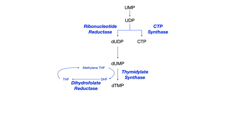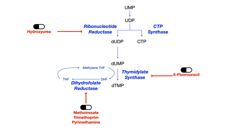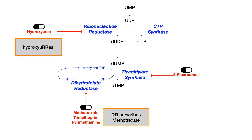Several drugs inhibit enzymes in the thymidylate synthase and THF-DHF cycle. Hydroxyurea inhibits ribonucleotide reductase. 5-fluorouracil inhibits thymidylate synthase. Methotrexate, trimethoprim, and pyrimethamine all inhibit dihydrofolate reductase. For mnemonics: hydroxyurea has two R's — RR for ribonucleotide reductase. For dihydrofolate reductase, DR stands for 'doctor,' and the doctor prescribes methotrexate, trimethoprim, or pyrimethamine — the doctor prescribes it, and it inhibits DR (dihydrofolate reductase).